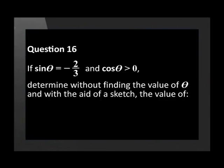Question 16. If sin theta is equal to negative 2 over 3 and cos theta is more than 0, determine without finding the value of theta and with the aid of a sketch the value of cos theta, and tan squared theta multiplied by sin theta.